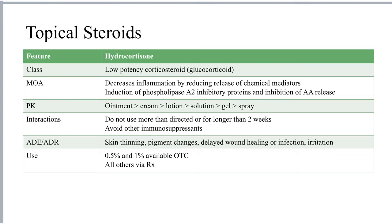First-line treatment for atopic dermatitis are the topical steroids. We will start with hydrocortisone as the prototypical topical steroid. Hydrocortisone itself is a low-potency corticosteroid and specifically a glucocorticoid. All corticosteroids have the same mechanism of action in dermatitis, which is to decrease inflammation by reducing the initial release of chemical mediators from mast cells. They do this by inducing phospholipase A2 inhibitory proteins and inhibiting the release of arachidonic acid, which leads to a reduction of chemical mediators released by mast cells.